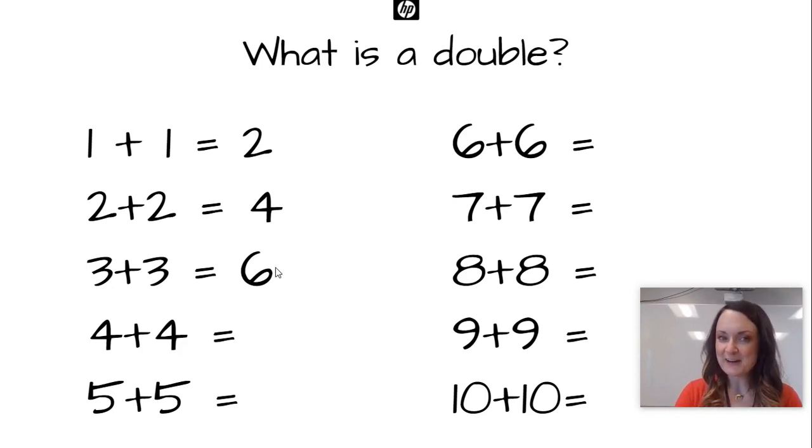Do you see a pattern? I know you guys are good mathematicians and good investigators. I wonder if you're noticing a pattern. Is it one more each time or something else? You're right. It's two more each time. If I have one and one here, I add one more to go up to two and one more to go up to two. And so each time we go up, there's a pattern of two more.